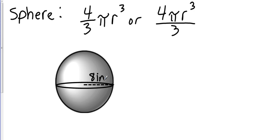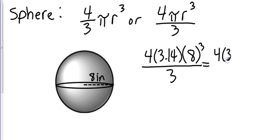So I'm going to take 4 times 3.14 times my radius, which is 8 cubed, and I'm going to take all of that and divide it by 3. All right, so let's find out what 8 cubed is. 8 to the third power is going to be 512, so that's going to be 4 times 3.14 times 512, all divided by 3.